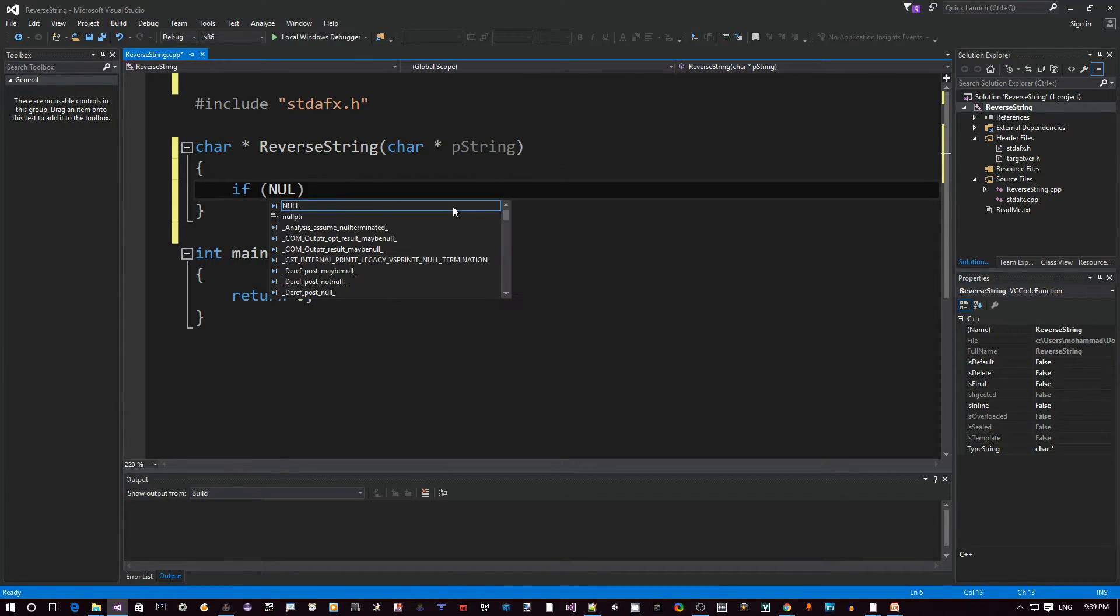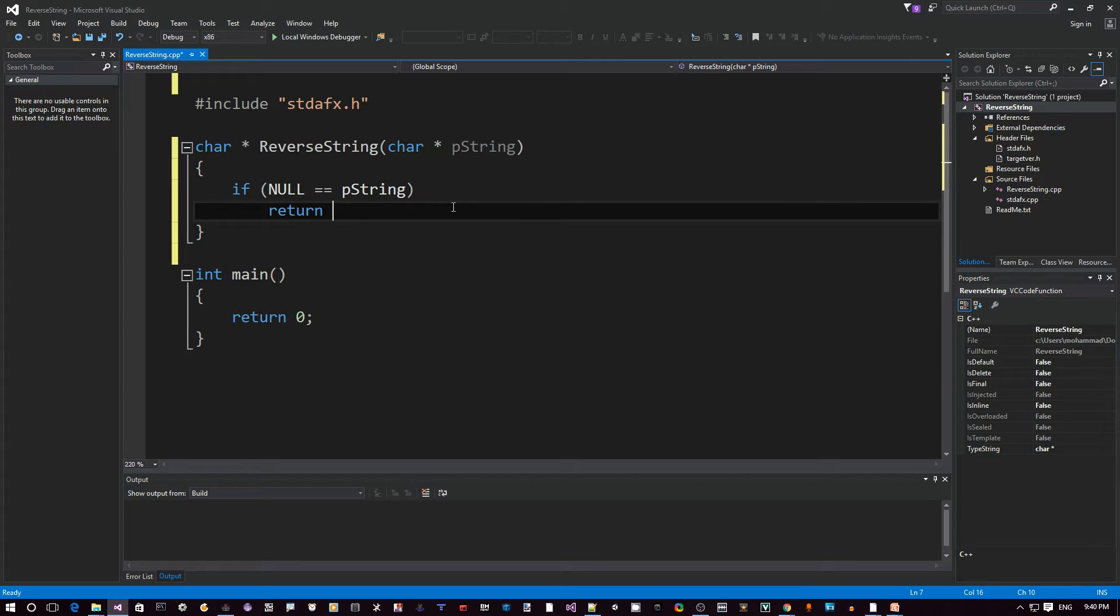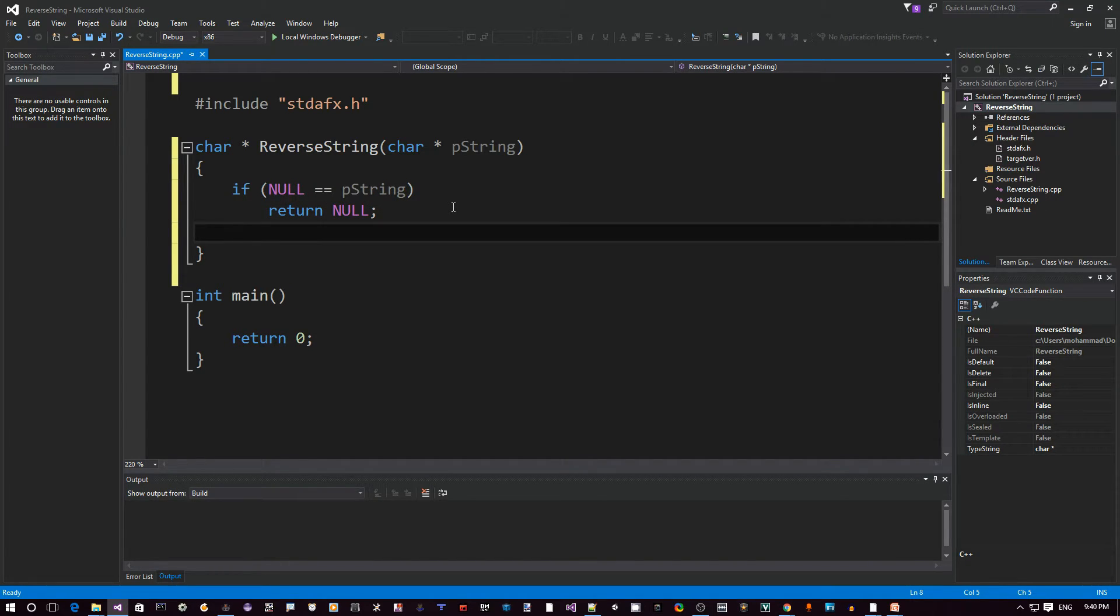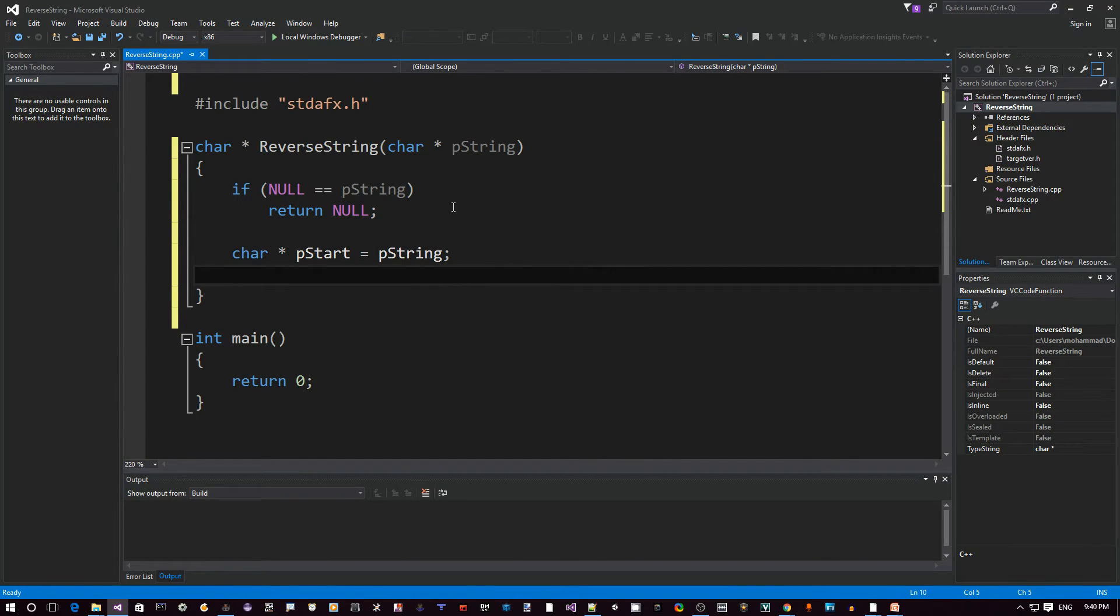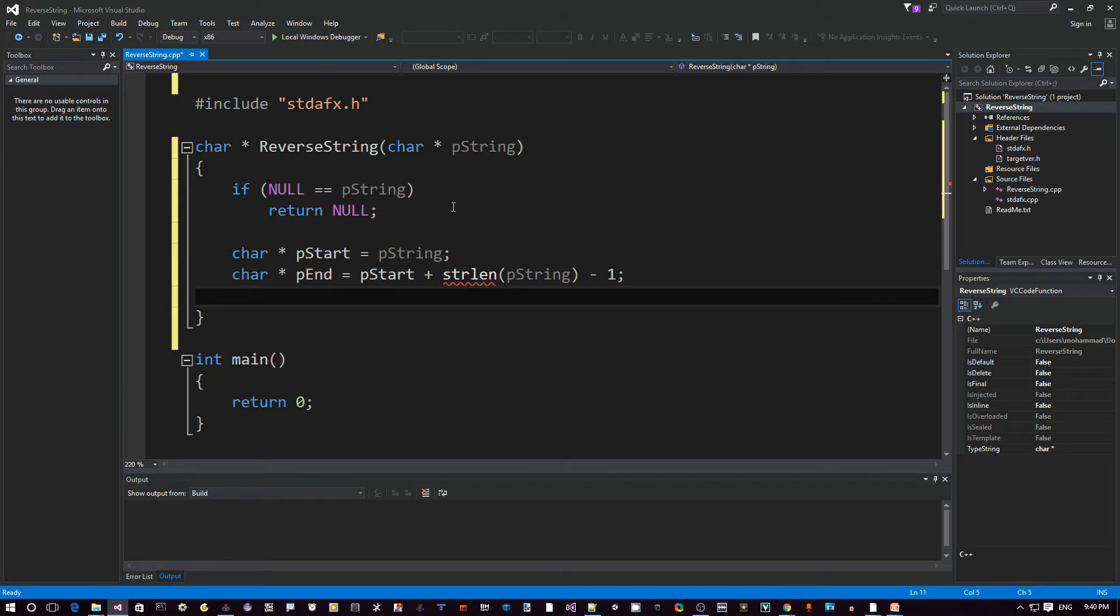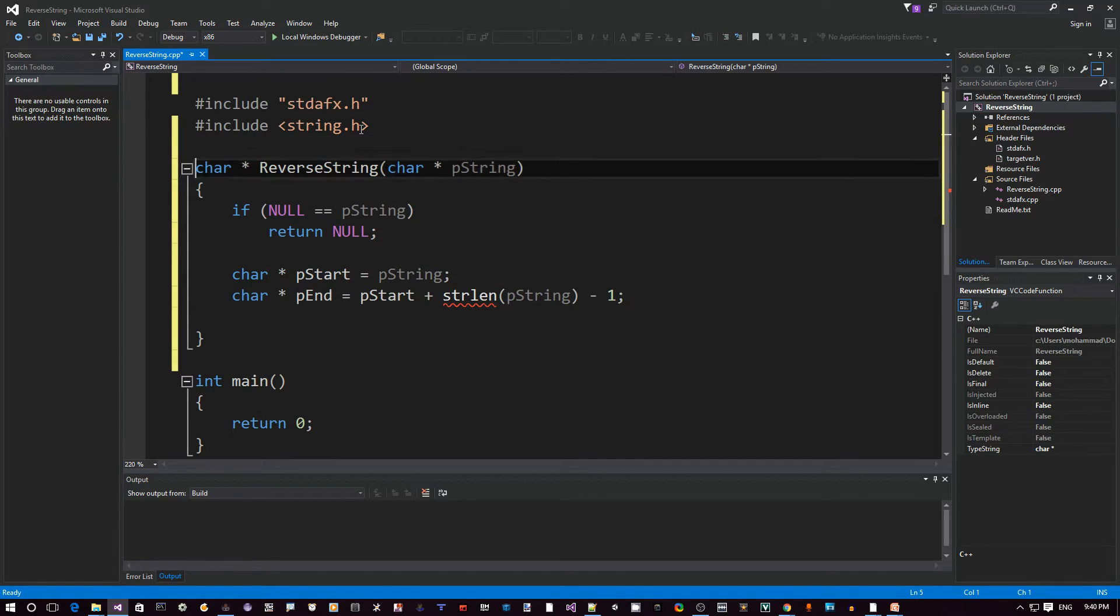All right, so the first thing we want to do here is basically the first thing you should always do when you write any new function is to validate the input parameters. What if the user passes in some invalid data? So in our case here, if the input is null, then we just return null. We cannot actually operate on this input. Other than that, I think we should be fine. So the first thing we said we want to do is we want to define a starting pointer equals P string. We can use P string itself, but I don't want to mess with it because at the end, it's going to be the one we want to return. So, and then the second pointer is going to be P end equals P start plus strlen of P string minus one, if you remember from the slides. So apparently string length is not defined. I need to include string.h, which is the string functions in C, C++. Okay, so that takes care of that.